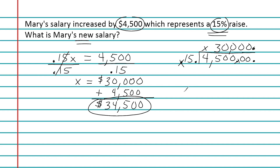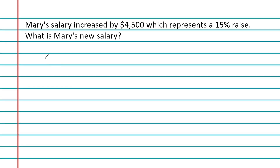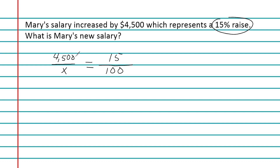Let's look at another way we could have solved this problem. Many students think in terms of proportions — one rate equal to another rate. The rate given is a 15 percent raise, and 15 represents part of an original total, so we write 15 out of 100. Since that numerator of 15 represents a part, we write 4,500 as the numerator on the other side, as it represents a part of some total x.